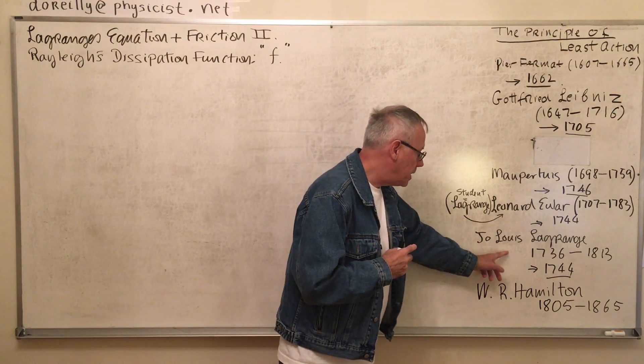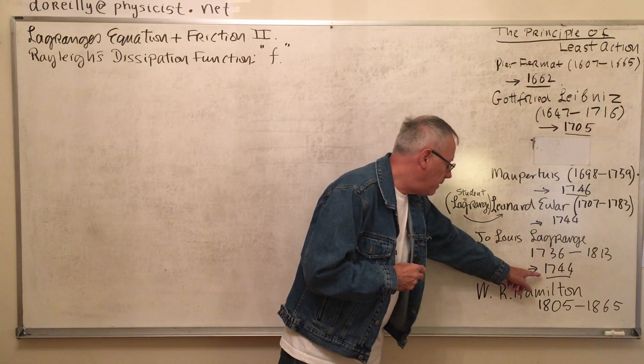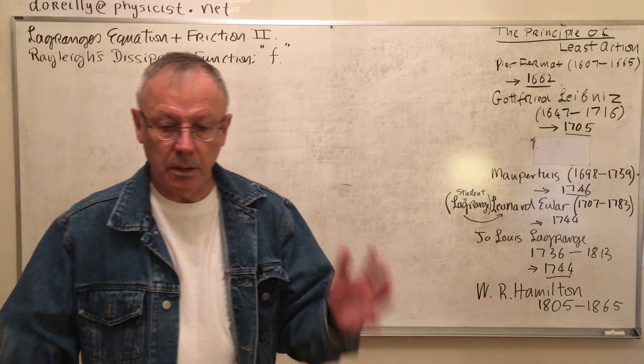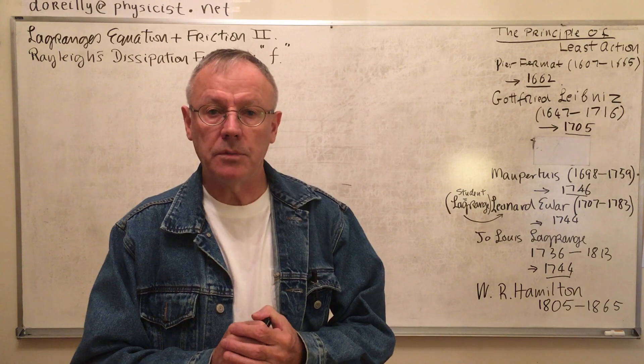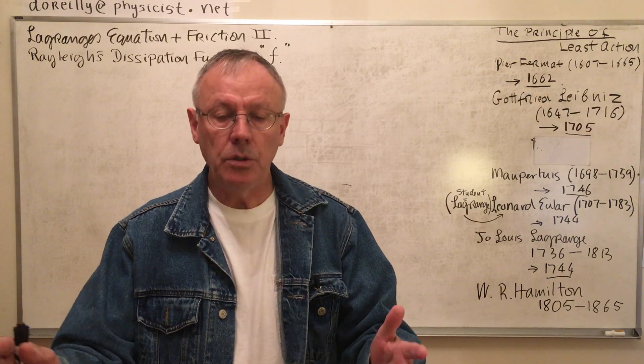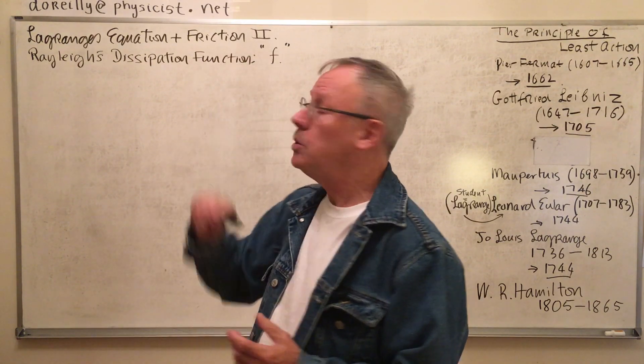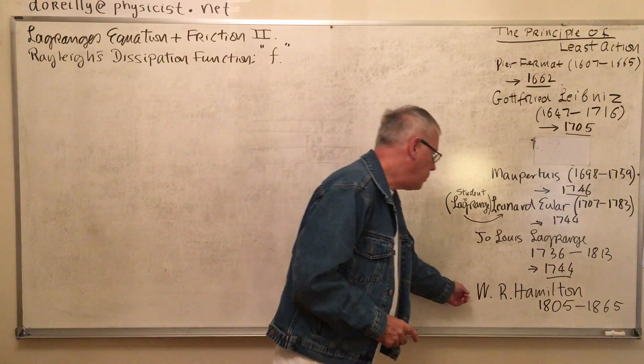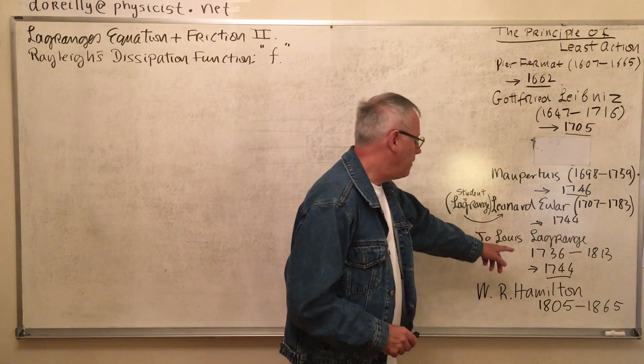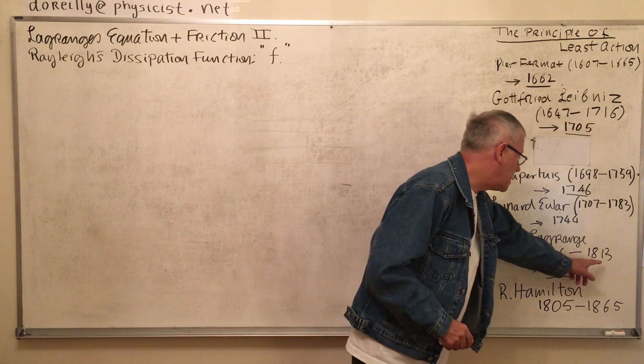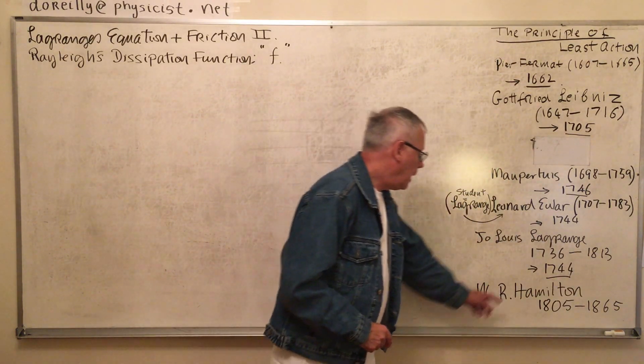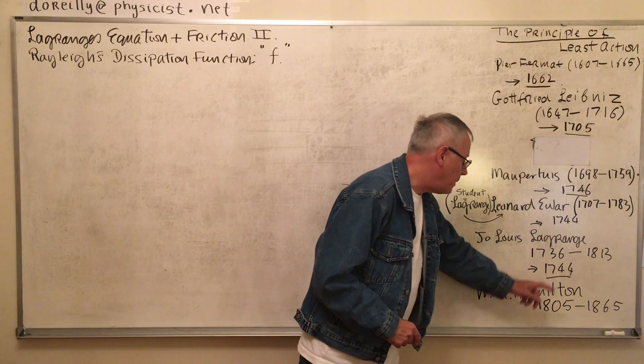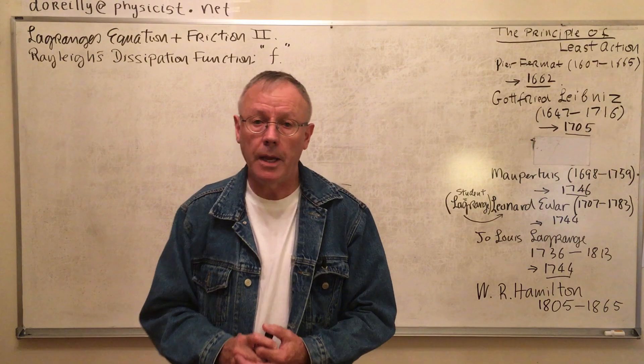So now Lagrange comes into the fray. In 1744, he formulated the mechanics principle of least action in terms of minimising the action using his Lagrange's equation. We're going to use it in a minute to do our two examples again. And William Rowan Hamilton, oh yes, Lagrange lived between 1736 and 1813, and his principle, Lagrange's equation came out in 1744. Alright?